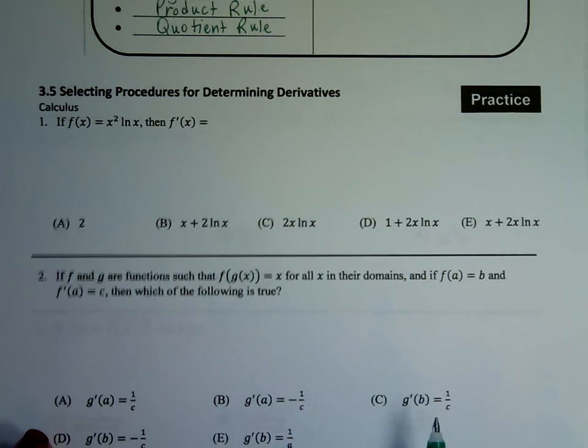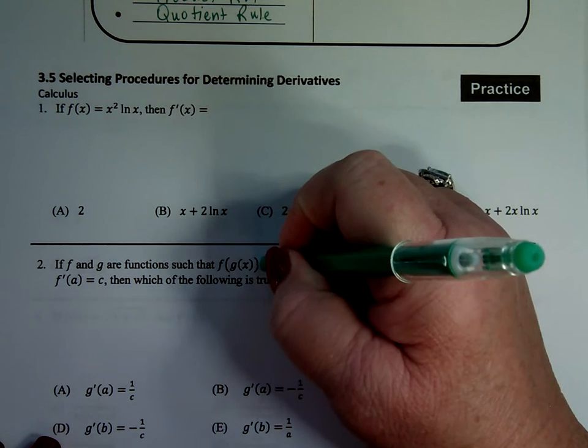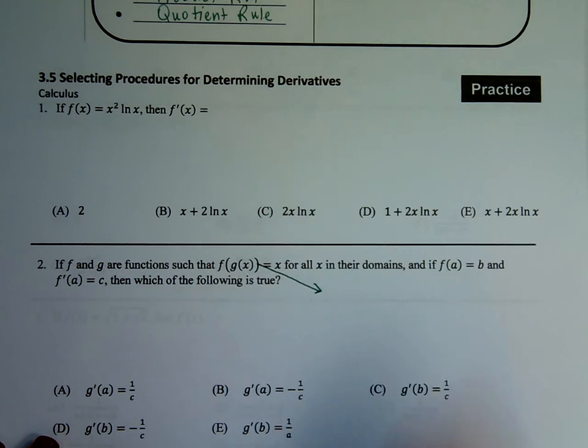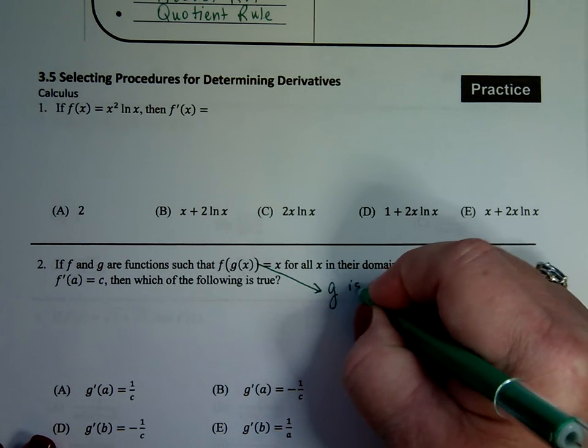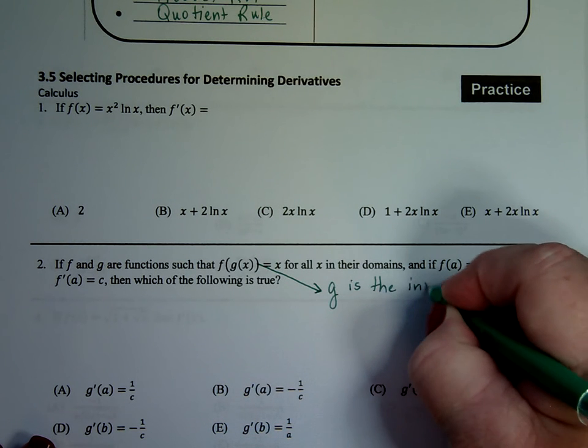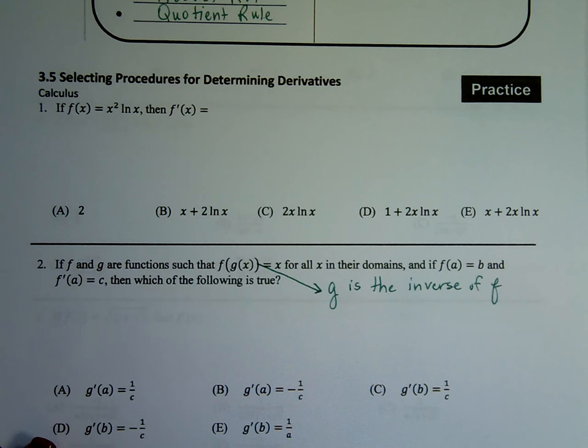Let me read it to you and see what you think. If f and g are functions such that f of g of x is equal to x for all x in their domains, and if f of a equals b and f prime of a equals c, then which of the following is true? What a classic AP question, right? Because you read it and you're like, I have no idea where to start this whole thing. So let's go to this statement right here. f of g of x. That means that g, the inside guy, is the inverse of f.